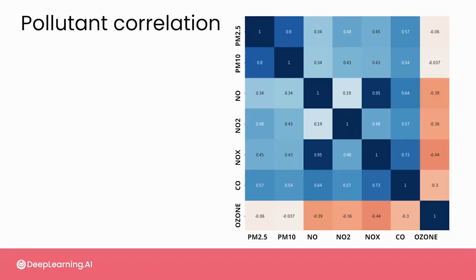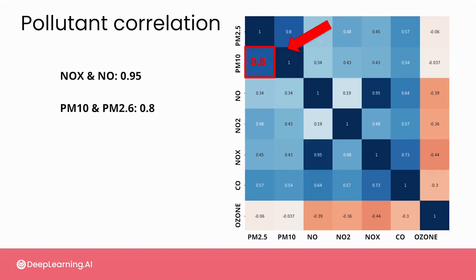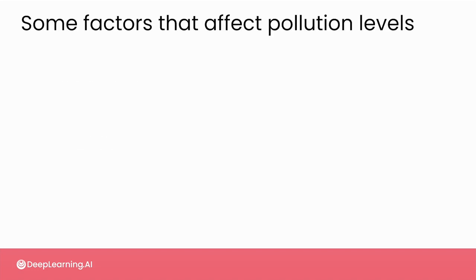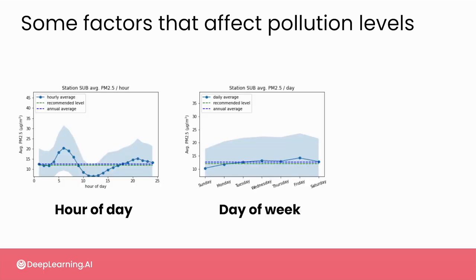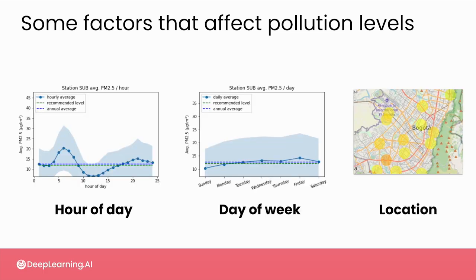In your exploration of the data, you uncovered patterns, including correlations between different pollutants, as well as trends in pollutant levels that depended on things like the time of day, week, and the sensor station location. And all of this gave you a strong indicator that AI may, in fact, be able to add value here.